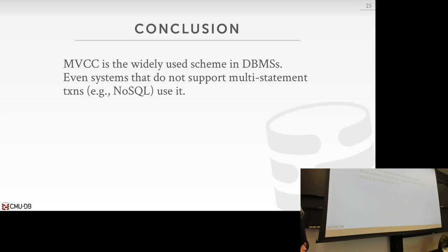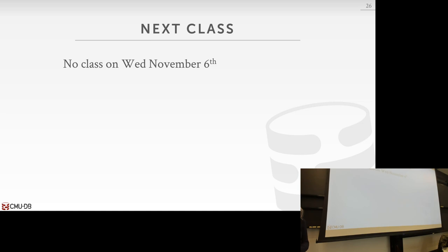To conclude, today we talked about multiversion concurrency control. As seen in the past few slides, there's a lot more to this than just figuring out timestamps and which versions are visible. You need to figure out how to store versions, update them, update indexes correctly, garbage collect, and more. For next class, no class on Wednesday — you have it off. The following week Andy will likely be back and we'll start logging and recovery.